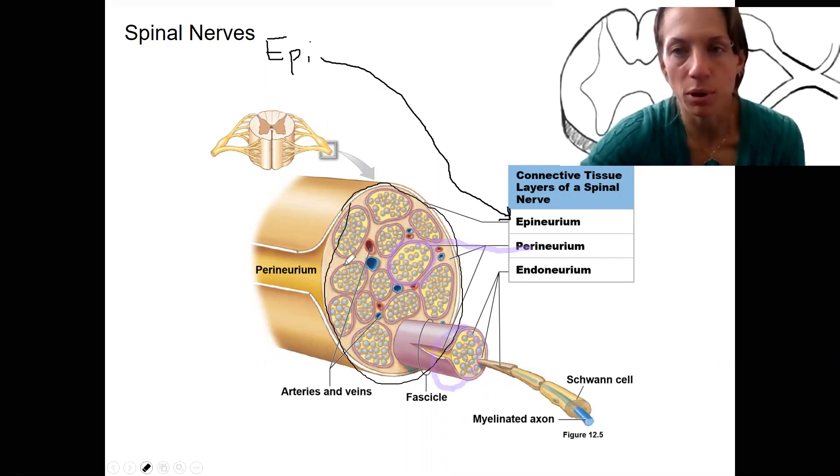These fascicles are composed of many myelinated axons that are then surrounded, and that's where the arteries and veins that supply blood to the neuron would be.